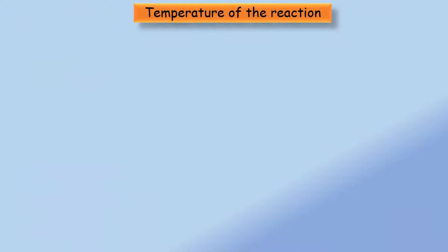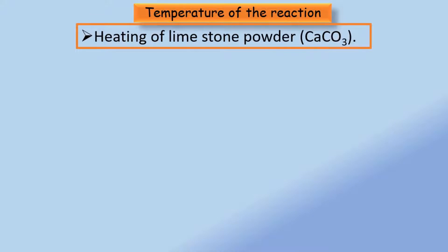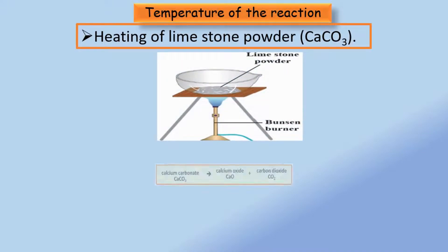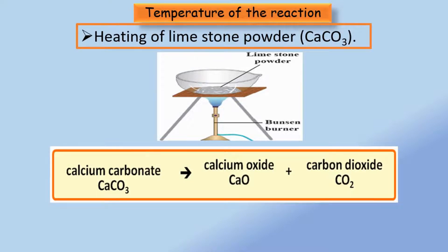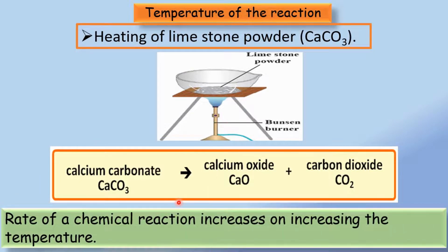Temperature is one of the important factors that affects the rate of a chemical reaction. We have studied decomposition of calcium carbonate — that is limestone powder — after heating. Calcium carbonate decomposes on heating into calcium oxide and carbon dioxide. But the rate of this reaction is zero at room temperature; we need to provide heat externally. So we can conclude that the rate of a chemical reaction increases on increasing the temperature.